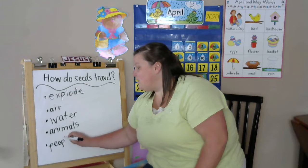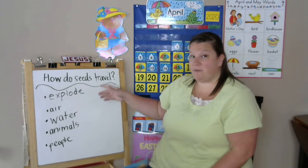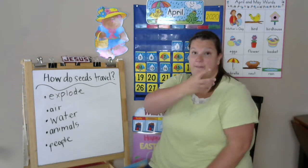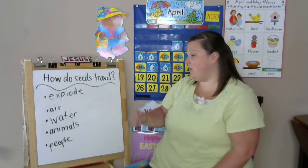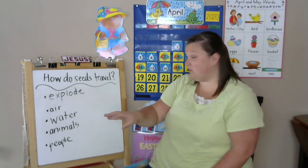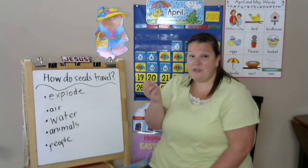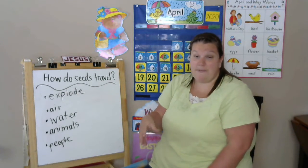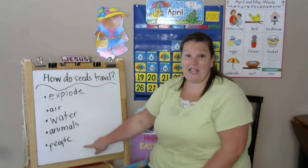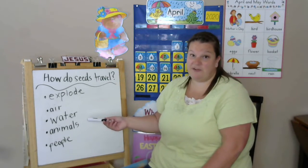Let's take a look back at our list. Plants can explode and move from themselves. They can travel by air — wind picks it up and moves it about. Water — they could get into a lake or a river and drift out. Animals — birds can pick them up, squirrels can bury them, bears could have seeds sticky on their backs and rub them on trees. And then people — we plant them too. So seeds travel lots of different ways.